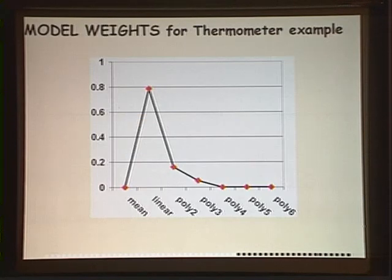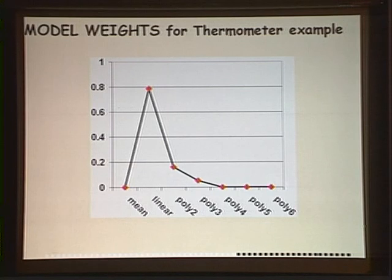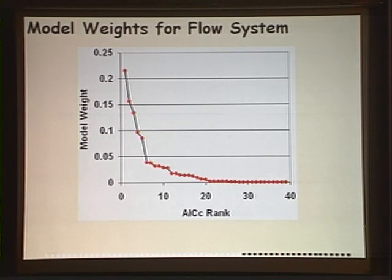Looking at the model weights for the thermometer example, the linear model shows up very strongly as the highest weighted model at 80 percent. For the various flow system models, there are a number with fairly significant weight, and then it trails off to very low weights.